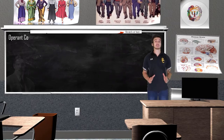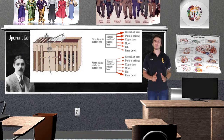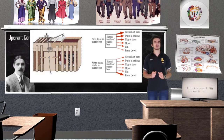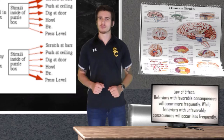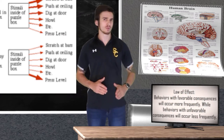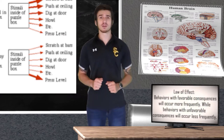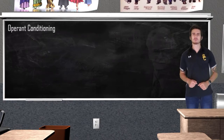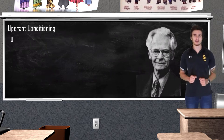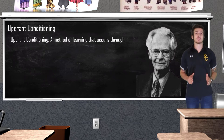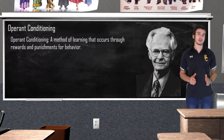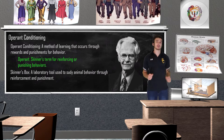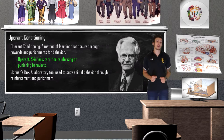Now onto operant conditioning. In 1898, Edward Thorndike proposed his idea of the law of effect, which states that behaviors with favorable consequences will occur more frequently, while behaviors with unfavorable consequences will occur less frequently. In 1938, behavioral psychologist B.F. Skinner founded the idea of operant conditioning, which examines how an individual makes an association between a behavior and a consequence. This type of learning differs from classical conditioning: while classical conditioning relies on reflexive responses, operant conditioning focuses on how we make voluntary behavioral changes as a result of environmental consequences.